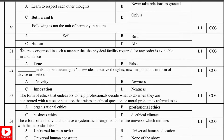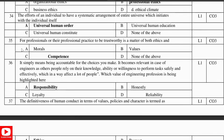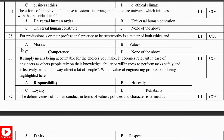The form of ethics that helps professionals decide what to do when confronted with a case or situation that raises an ethical question or moral problem is called professional ethics. The efforts of an individual to have a systematic arrangement of the entire universe that initiates with the individual itself is universal human order. For professionals, their professional practice to be trustworthy is a matter of both ethics and competence — it simply means being accountable for the choices you make. This becomes relevant for engineers as other people rely on their knowledge, ability, or willingness to perform tasks safely and effectively, affecting a lot of people. The value of the engineering profession being highlighted here is: responsibility.